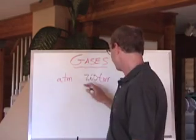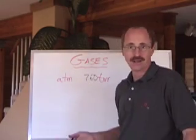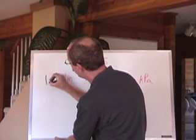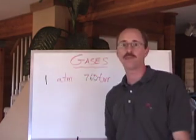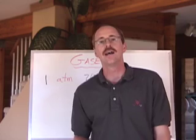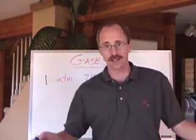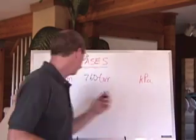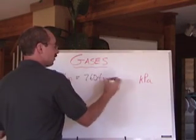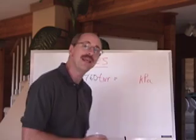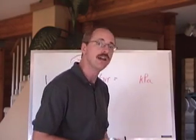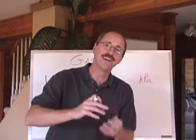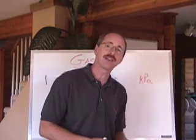Now, 760 TOR is a very big number — why don't we just call it one atmosphere? And that's exactly the most convenient way of describing pressure in atmospheres. But you won't necessarily see that if you're working in Canada. So what is the equivalence between one atmosphere and 760 TOR in terms of kilopascals? Kilopascals represent force per unit area — newtons per meter.